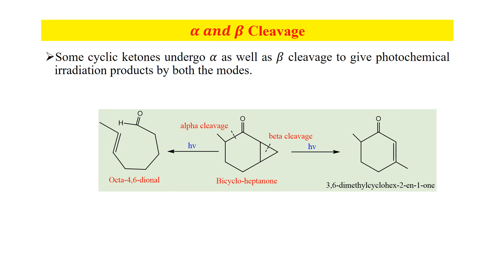Here is another example showing certain other possibilities. If both alpha and beta cleavage take place — here is the beta cleavage as seen previously — then an alpha-beta unsaturated carbonyl compound is formed. And if this alpha bond is cleaved, then an unsaturated aldehyde is formed. We have seen this example in Norrish type 1 reaction. This is all about Norrish type 2 reactions. Thank you.